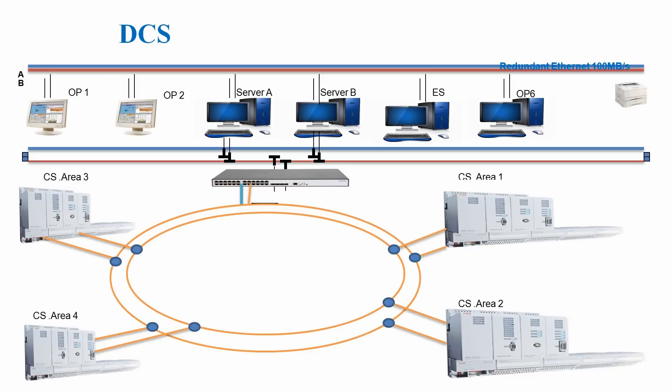On that LAN network we have the operator station, engineering station, servers, and even a printer. The main concept is that in area 1, area 2, area 3, and area 4, each has its own controller. Not only one controller per area — you have redundant controllers. In area 1, for example, you have two controllers: one is the main controller and one is redundant. If the main controller fails, the redundant one will take over. Same for area 2 — you have a main controller and a redundant controller. This is the beauty of the DCS.